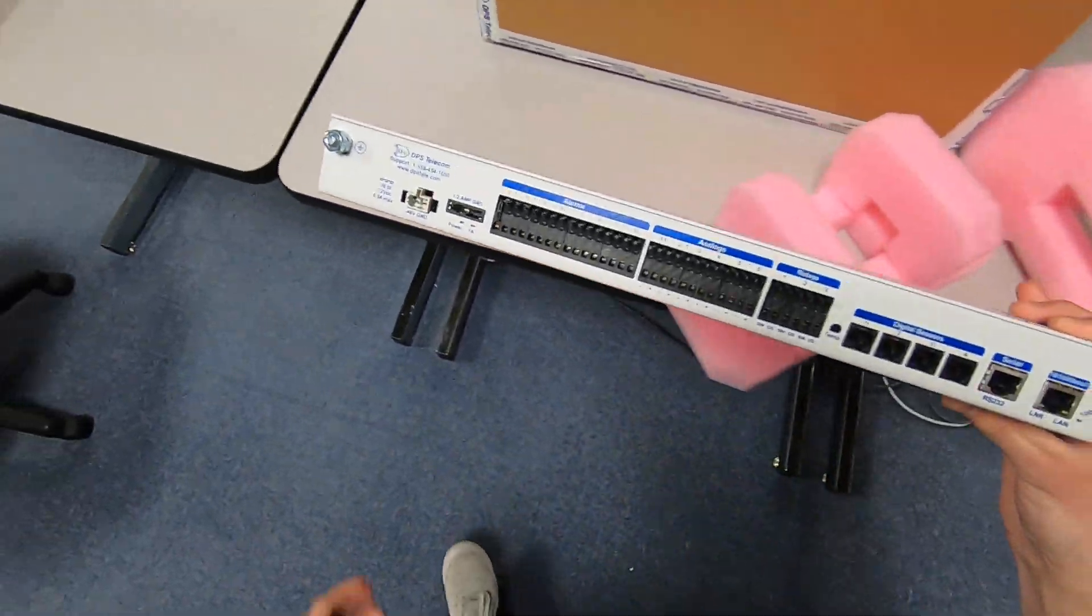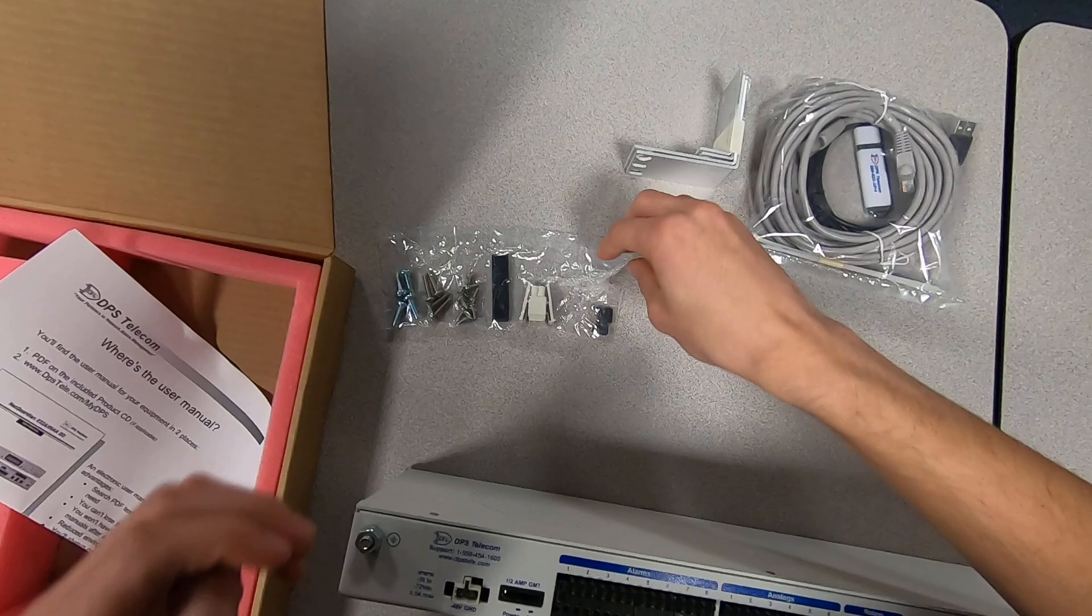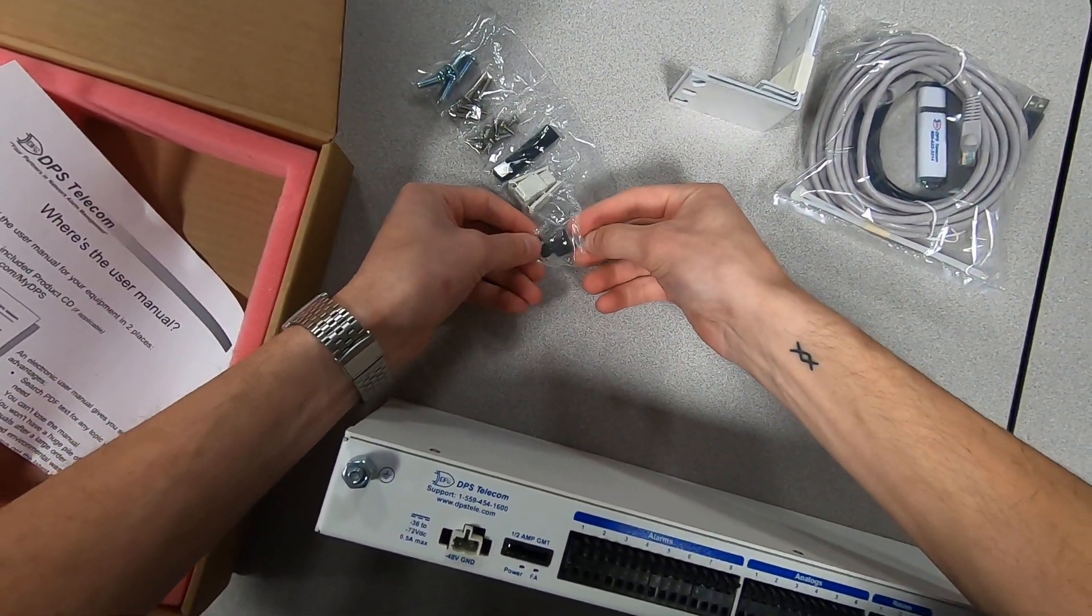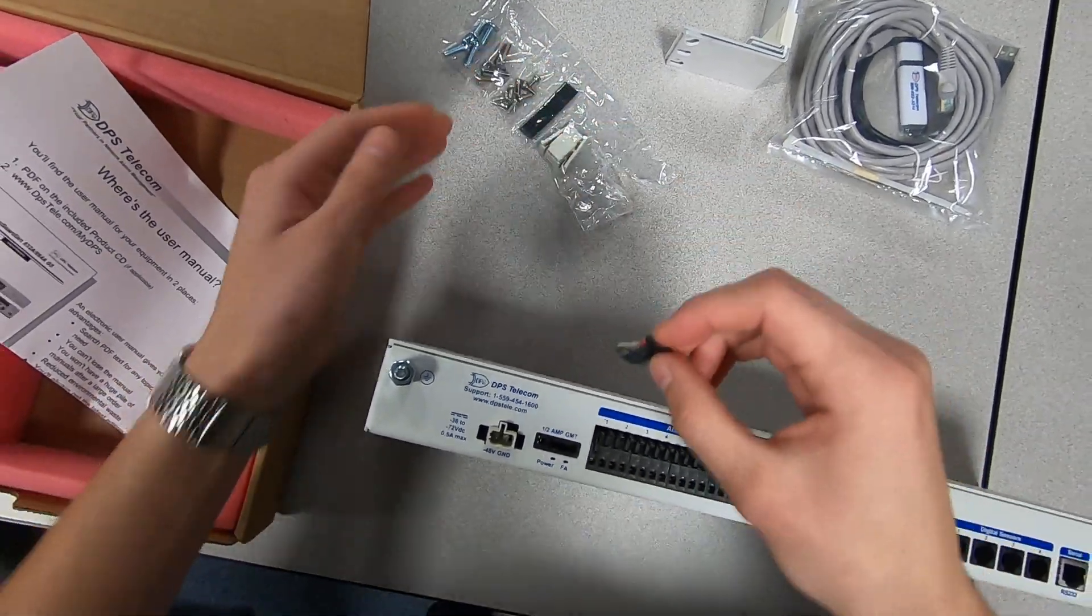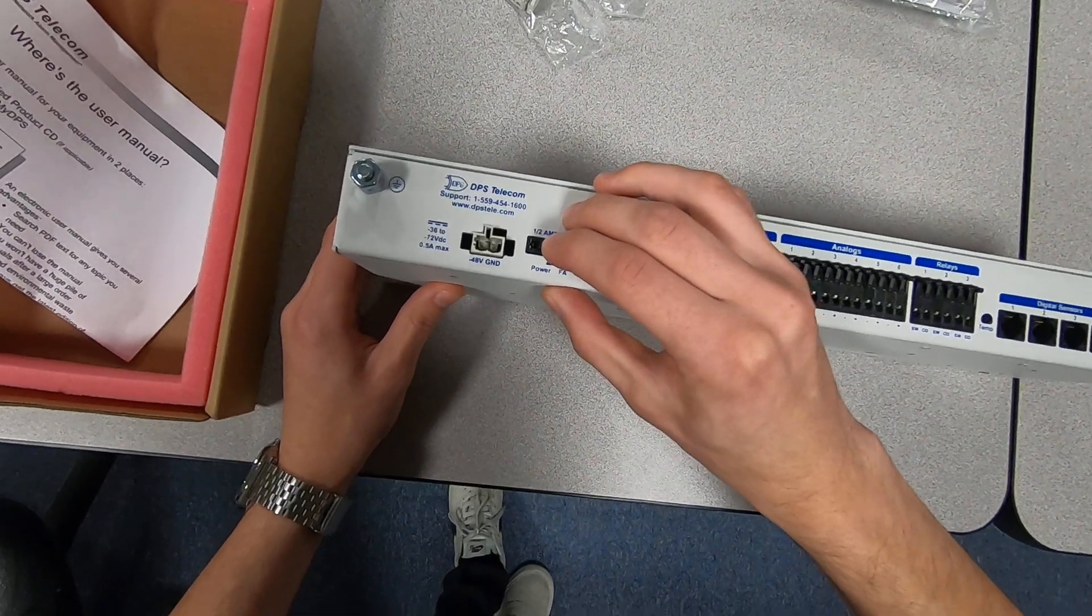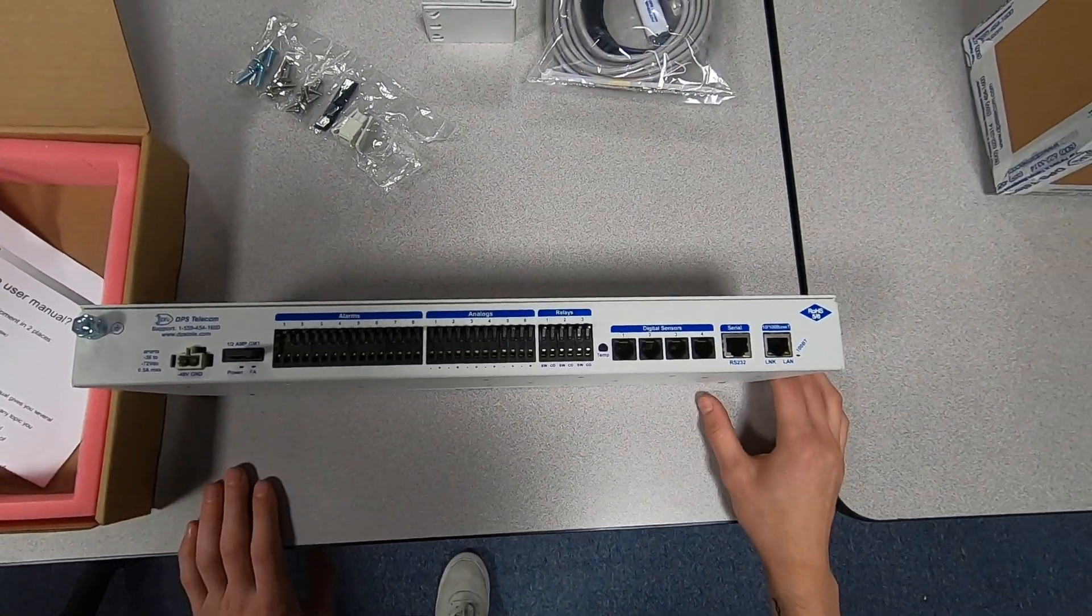One last thing we have to do before we get this in the rack and finish setup is come back to our setup kit, grab a fuse, and put it in the unit. We put our fuses in the kit and not in the unit, so make sure you don't lose this. We grab our fuse, put it in just like that, and we're ready to go. Now we can get this in the rack and finish setting it up.